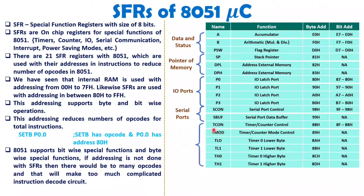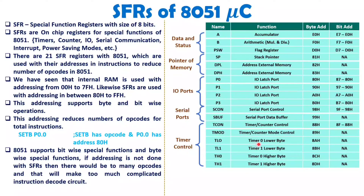For timer and counter, we have 6 Special Function Registers. TCON and TMOD are used to set up the timer or counter. There are 2 timers, T0 and T1. For these we have TL0, TH0, TL1, and TH1 — in total 4 registers — because each timer is 16 bits wide and is split into two 8-bit halves. These timer registers are used for both timer and counter functions, which will also be covered in future videos.